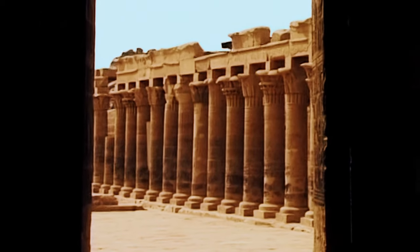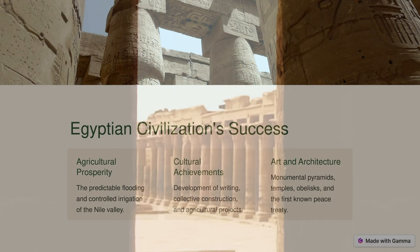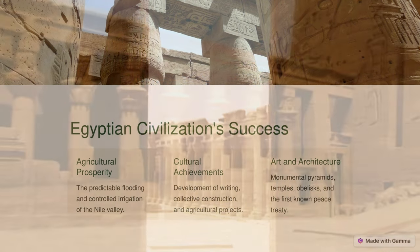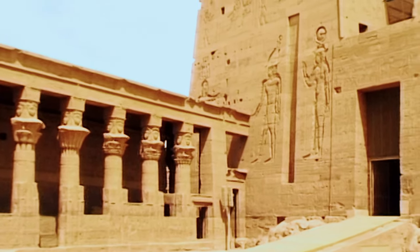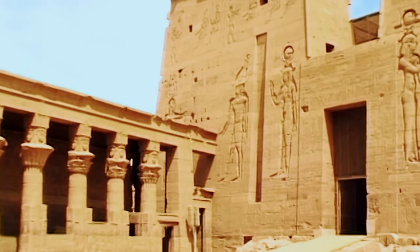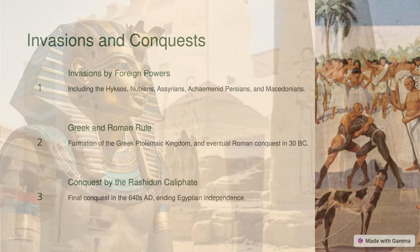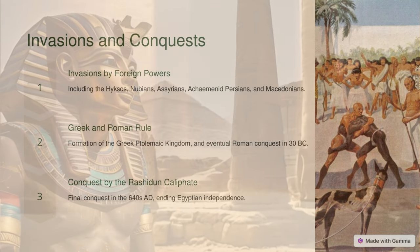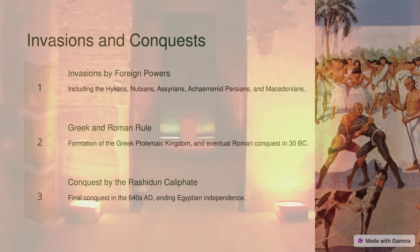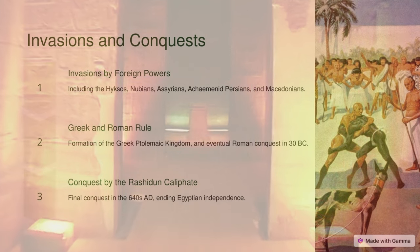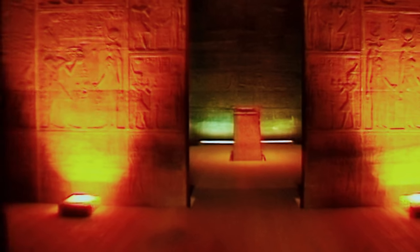Egypt reached the pinnacle of its power during the New Kingdom, ruling much of Nubia and a sizable portion of the Levant, after which it entered a period of slow decline. During the course of its history, Egypt was invaded or conquered by a number of foreign powers, including the Hyksos, the Nubians, the Assyrians, the Achaemenid Persians, and the Macedonians under Alexander the Great. The Greek Ptolemaic Kingdom, formed in the aftermath of Alexander's death, ruled Egypt until 30 BC, when, under Cleopatra, it fell to the Roman Empire and became a Roman province.